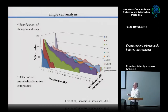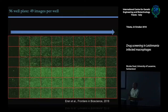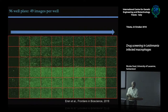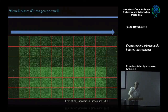This approach can be applied to drugs but also to any supplement — vitamins or whatever. You end up with a 96-well plate analysis, taking 49 images per well, so there is no bias from someone counting amastigotes on each slide — the machine does it for you.